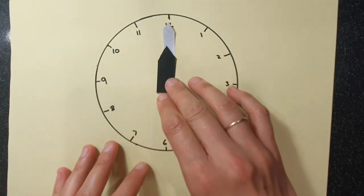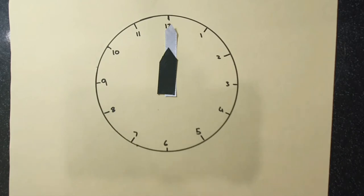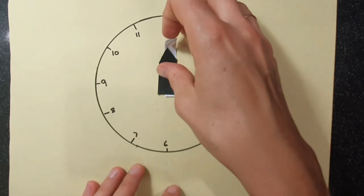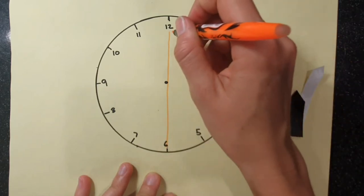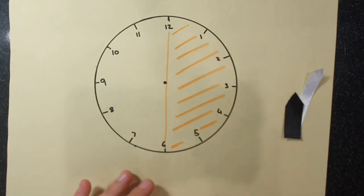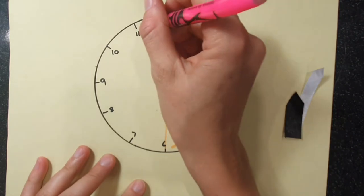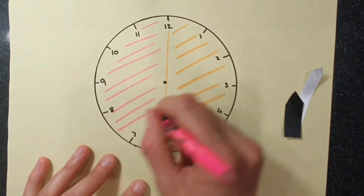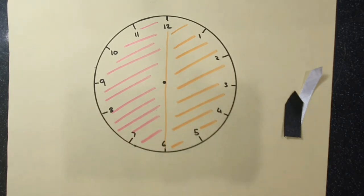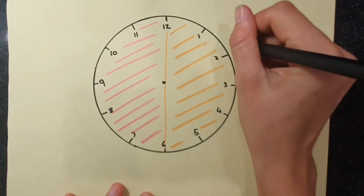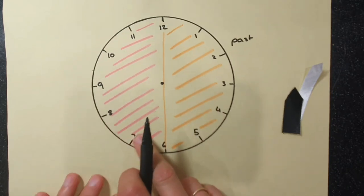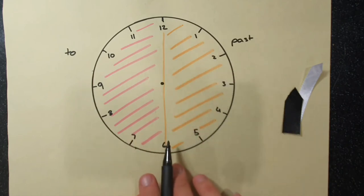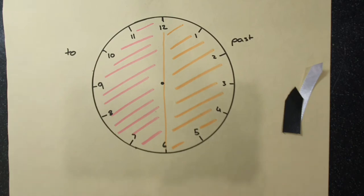But what if the time isn't an o'clock? What if it's not time for a new hour to begin? How do we actually go about saying that? What we need to do is look at our clock and divide it into two main parts. We're going to put a line straight down the middle and colour one side orange and one side pink. The orange side of the clock is going to be our past side. So any time the big hand is on the orange side, the time is going to be read as something past the hour. The pink side is going to be our to side, and once we get past the orange side, we're going to start counting how many minutes until the next hour.